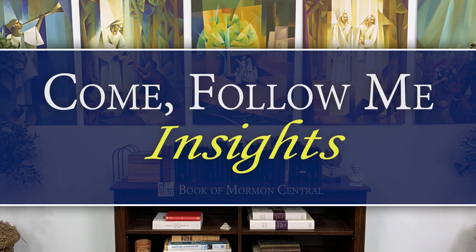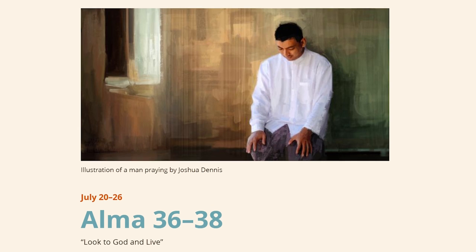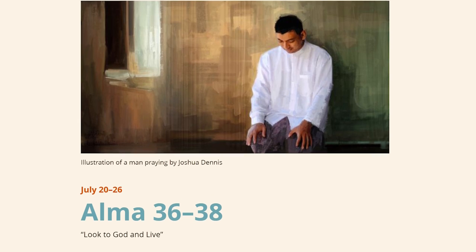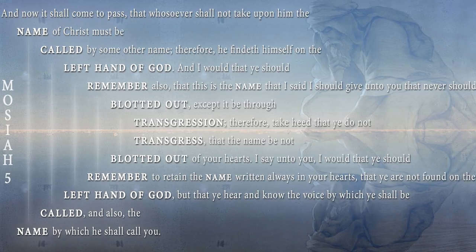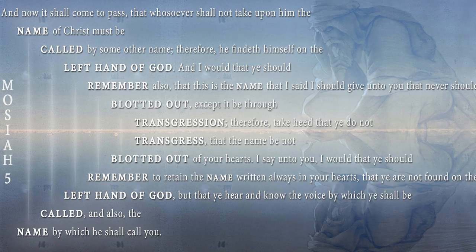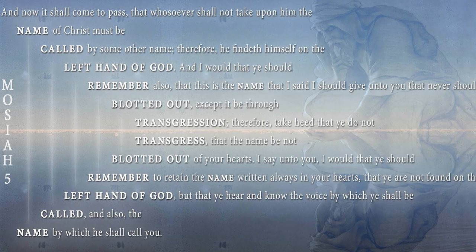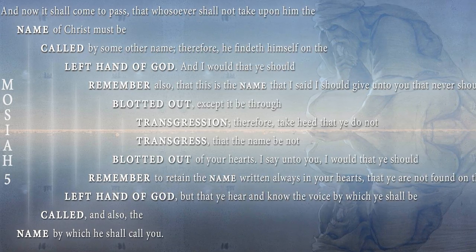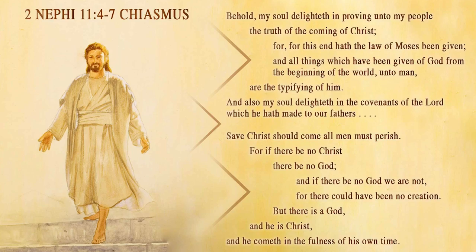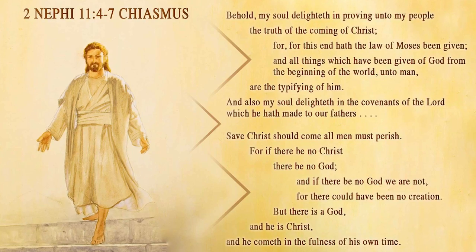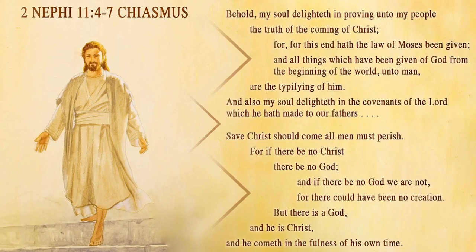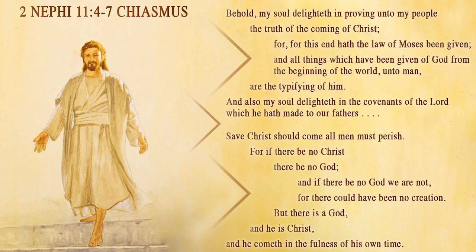This is Come Follow Me Insights from Book of Mormon Central. Today, Alma 36-38. We've brought our friend Jack Welch on. He is the founder of Book of Mormon Central and the discoverer of a beautiful literary pattern in the Book of Mormon called chiasmus. We're delighted today to have him talk about that discovery and why it matters.